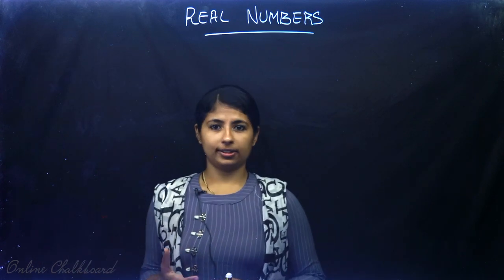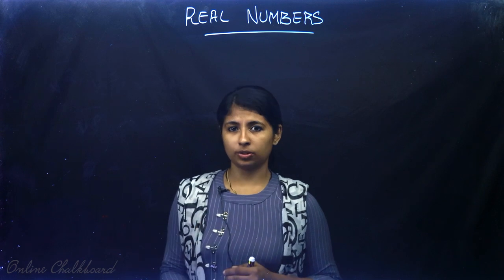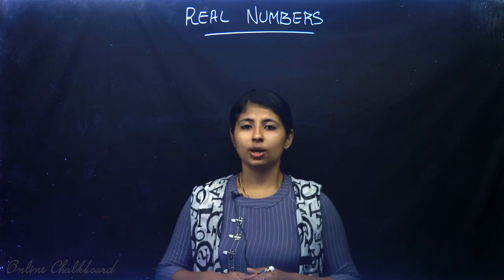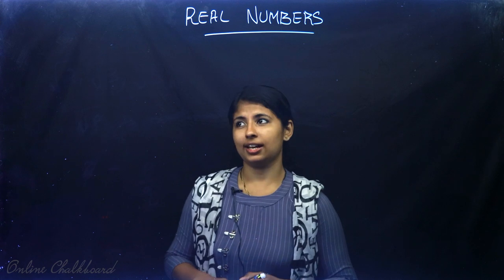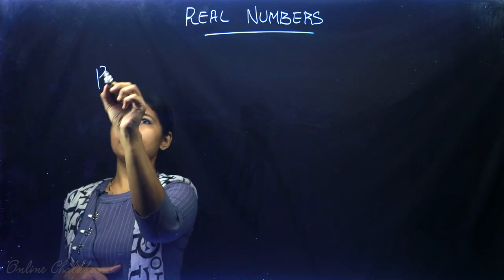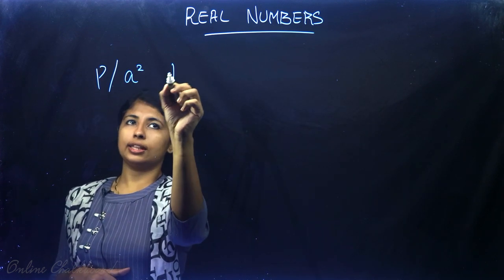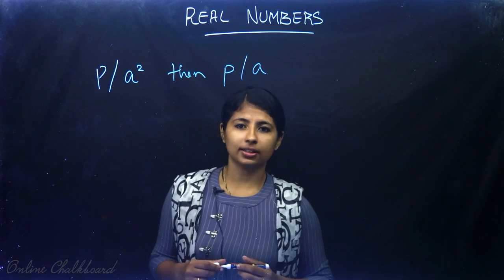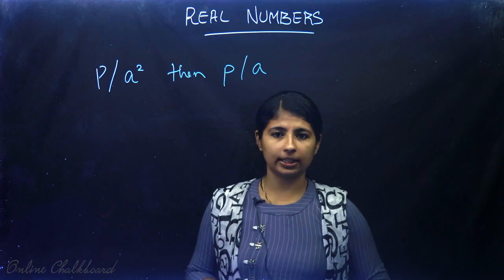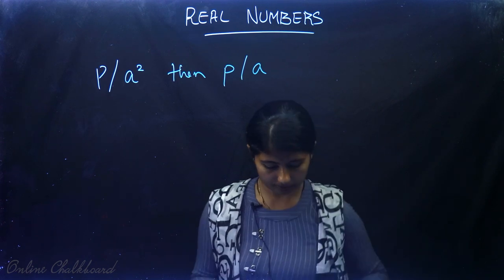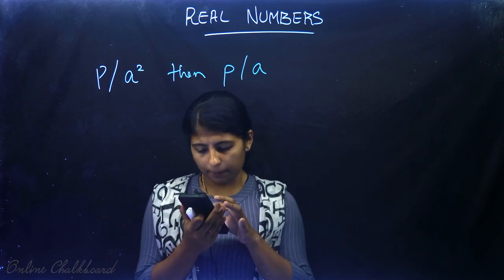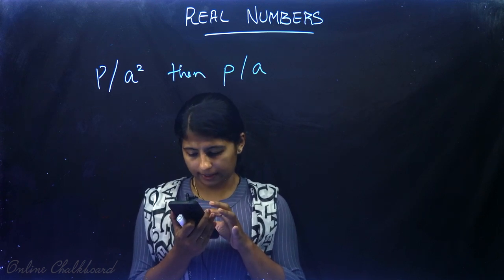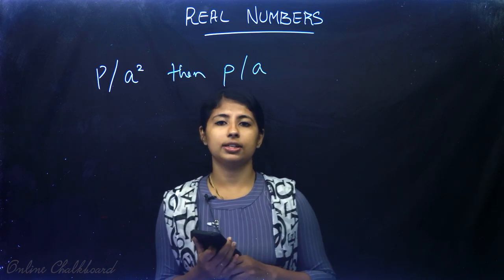Before we prove this, we must know a theorem based on the fundamental theorem of arithmetic, which says: if p divides A², then p also divides A. This theorem is given on page 12 as Theorem 1.3: let p be a prime number; if p divides A², then p divides A, where A is a positive integer.